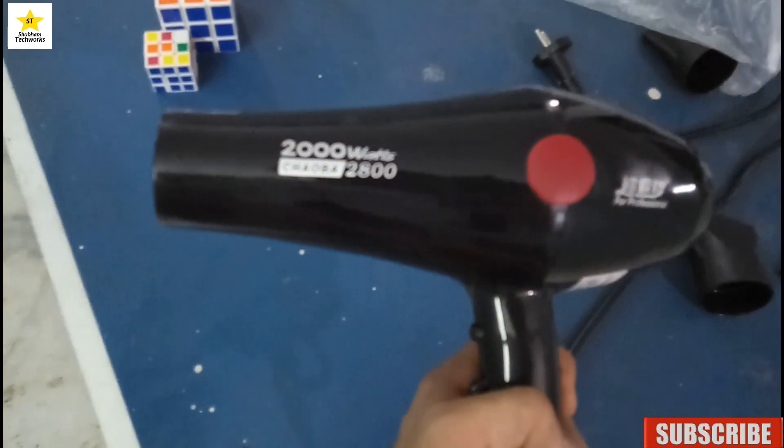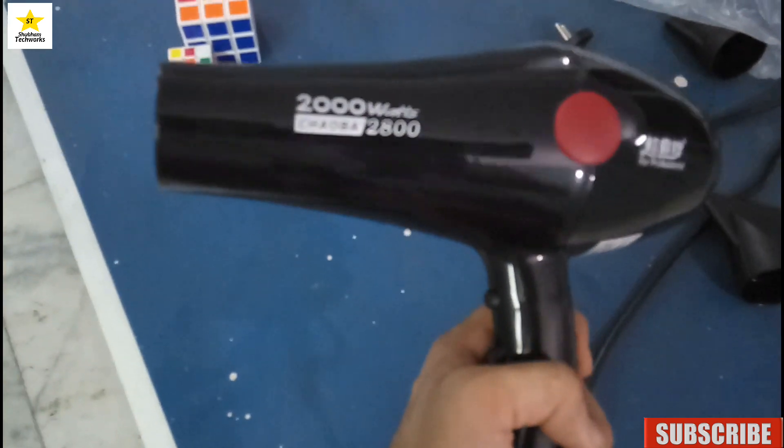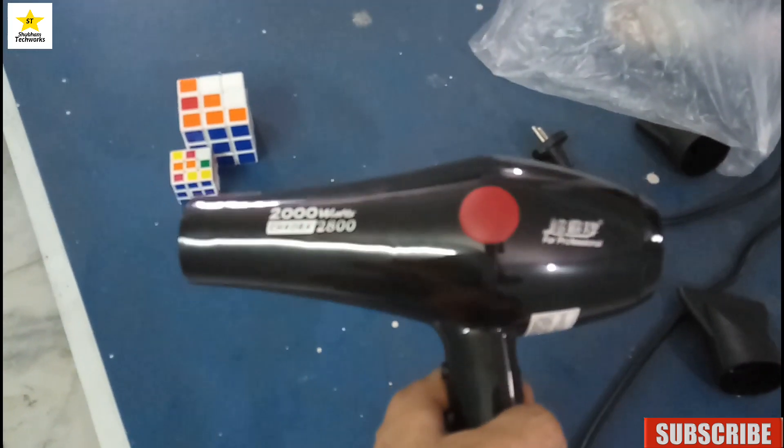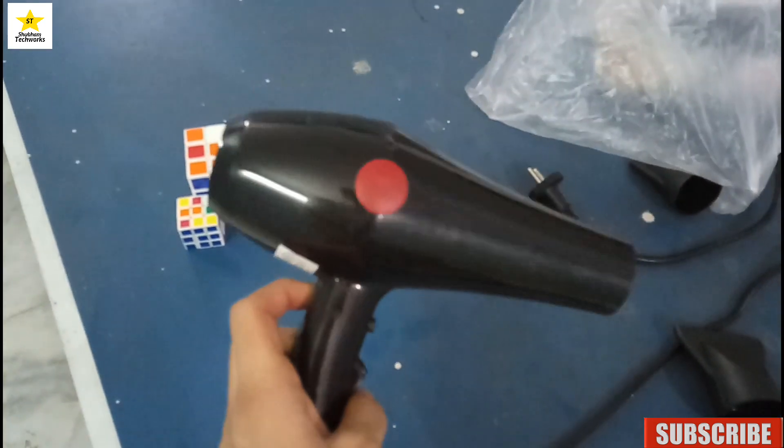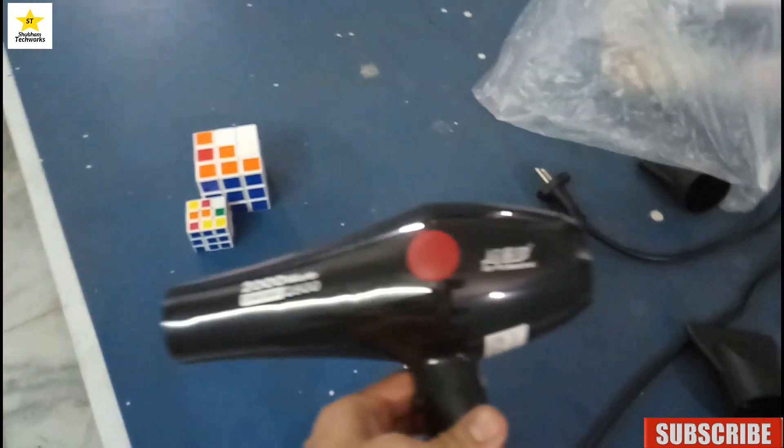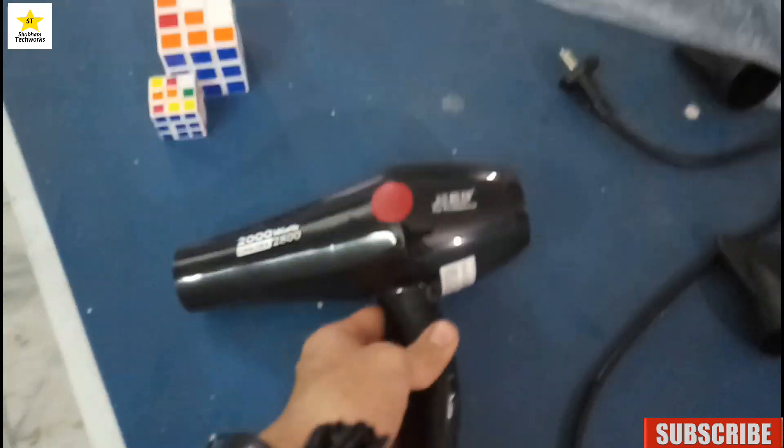And you can make any hairstyles. I will put this link in the description. You can buy it from Amazon. This one is almost 590 rupees. Two websites are available - Flipkart and Amazon - and the prices vary.